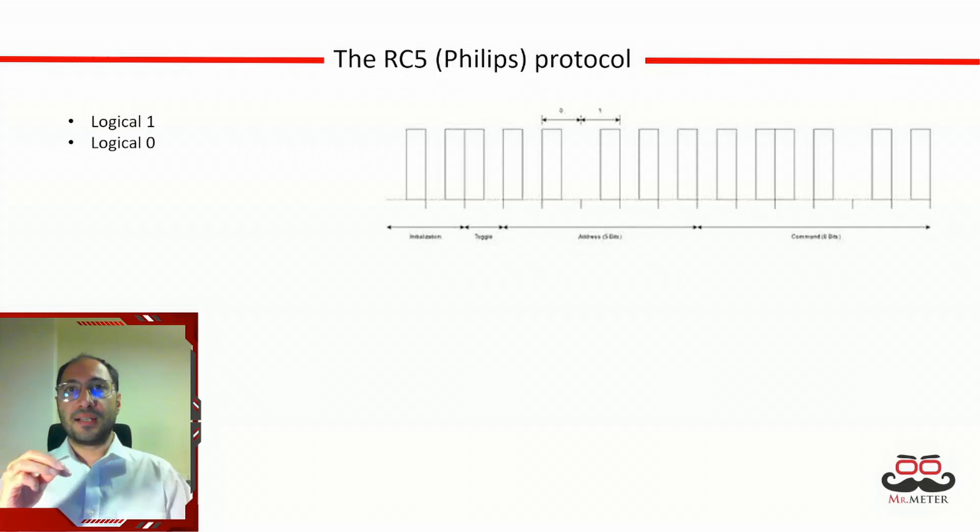Another difference is that it uses the 36 kilohertz carrier frequency. Logical 1 is an 889 microseconds low period followed by the same microseconds burst, and the logical 0 is an 889 microseconds burst followed by the same low period.